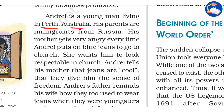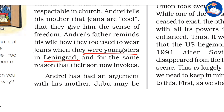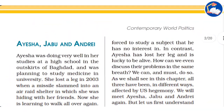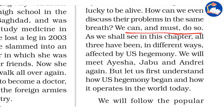Andre is a young man living in Perth, Australia. His parents are immigrants from Russia. His mother gets very angry every time Andre puts on blue jeans to go to church. She wants him to look respectable. Andre tells his mother the jeans are cool and give him a sense of freedom. His father reminds his wife how they used to wear jeans in Leningrad for the same reason. Jabu may be forced to study MBA rather than pursue his interest in painting. In contrast, Aisha has lost her leg and is lucky to be alive.